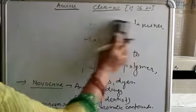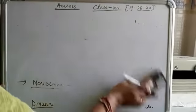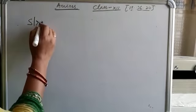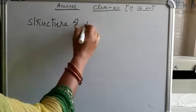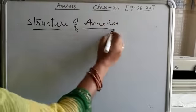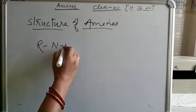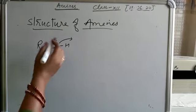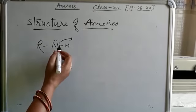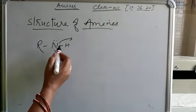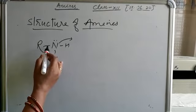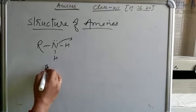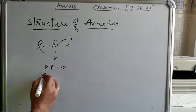Let's see the structure of amines. If we talk about primary amine, what will be the hybridization of nitrogen present in this compound? For knowing hybridization, we use the formula: number of sigma bonds plus lone pairs. There are three sigma bonds and one lone pair.